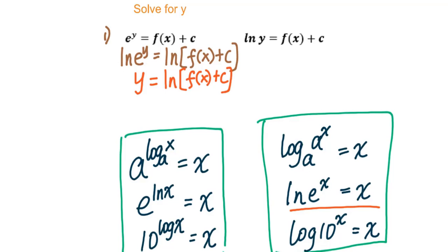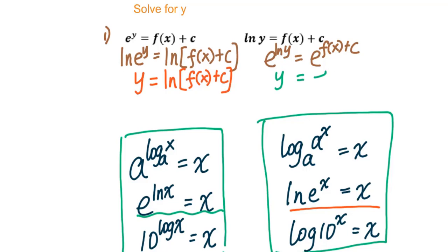For the second case, if natural log y equals f(x) plus c, you take e as the base and raise both sides to that power. You get e to the natural log of y equals e to the f(x) plus c. According to the formula e to the natural log of y equals y, you get y equals e to the f(x) times e to the c. We let e to the c equal a, so y equals a times e to the f(x).